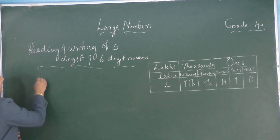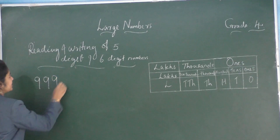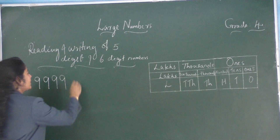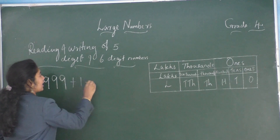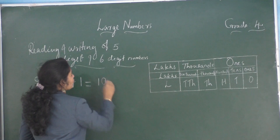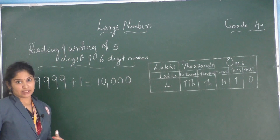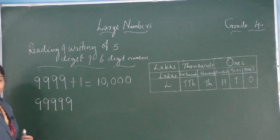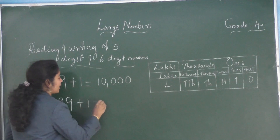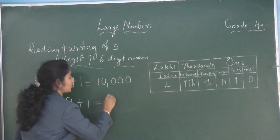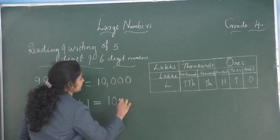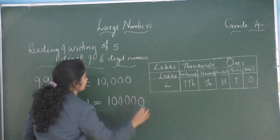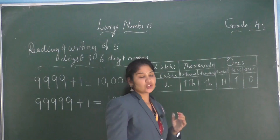Children, which is the largest four digit number? Yes, 9999. If we add one to the largest four digit number, we will get the smallest five digit number, that is ten thousand. Which is the largest five digit number? 99,999. If we add one to the largest five digit number, we will get one lakh.